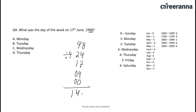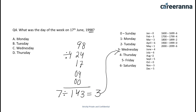Now we add all these numbers and get the total sum 143. If we divide 143 by 7, we know 140 is divisible by 7, so 3 is left — the remainder is 3. According to the table, the number 3 corresponds to Wednesday. So option C is the correct option. By this method you can solve this type of question very easily.